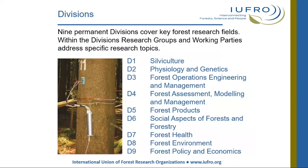IUFRO is composed of nine divisions that cover research on all aspects of forest science, including silviculture, physiology and genetics, forest operations, forest assessment, forest products, economics, social aspects of forestry, forest health, forest environment, and forest policy and economics. Specific subject areas within divisions are captured within research groups. For example, within Division 7, we have two research groups: forest pathology and forest entomology.